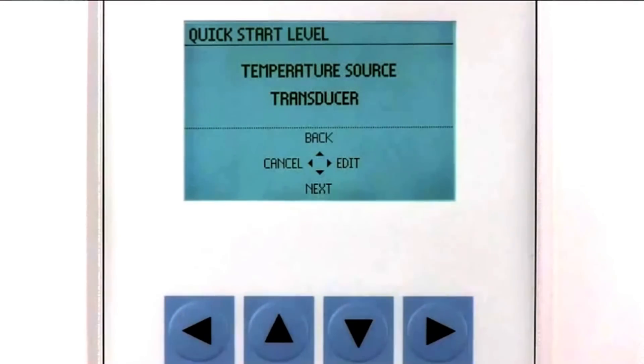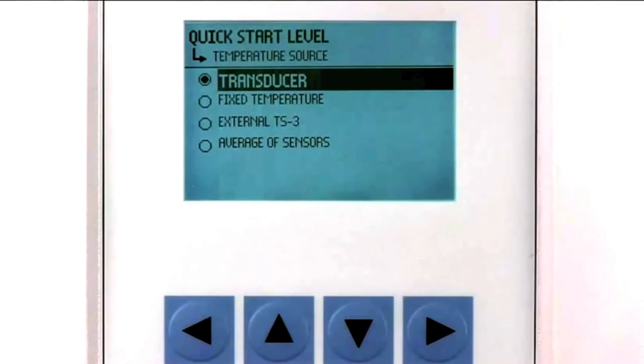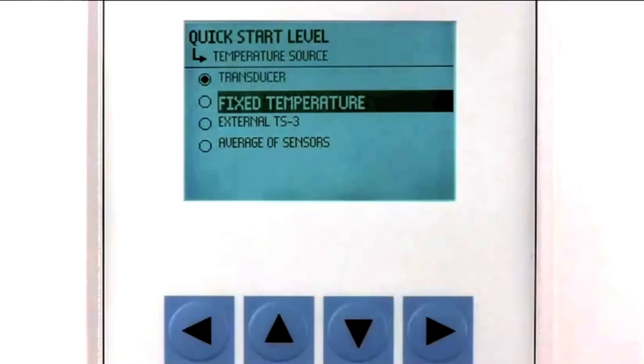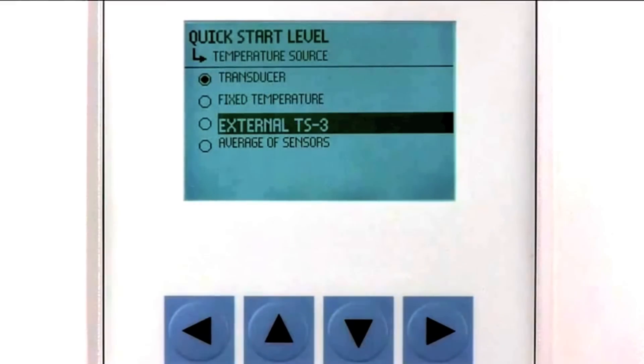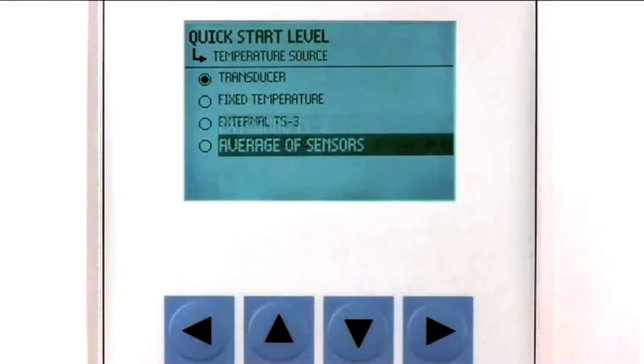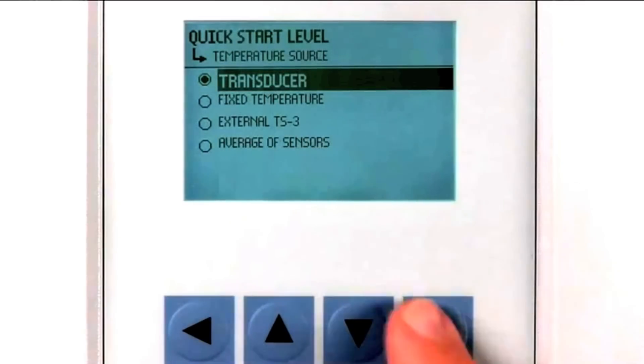The LUT400 uses a temperature sensor to automatically adjust for speed of sound changes within the measuring atmosphere. We can use the sensor built into the Echomax transducer or an external TS3 temperature sensor. Another option is the average of both the transducer temperature sensor and the TS3. We will use the transducer selection for our application.